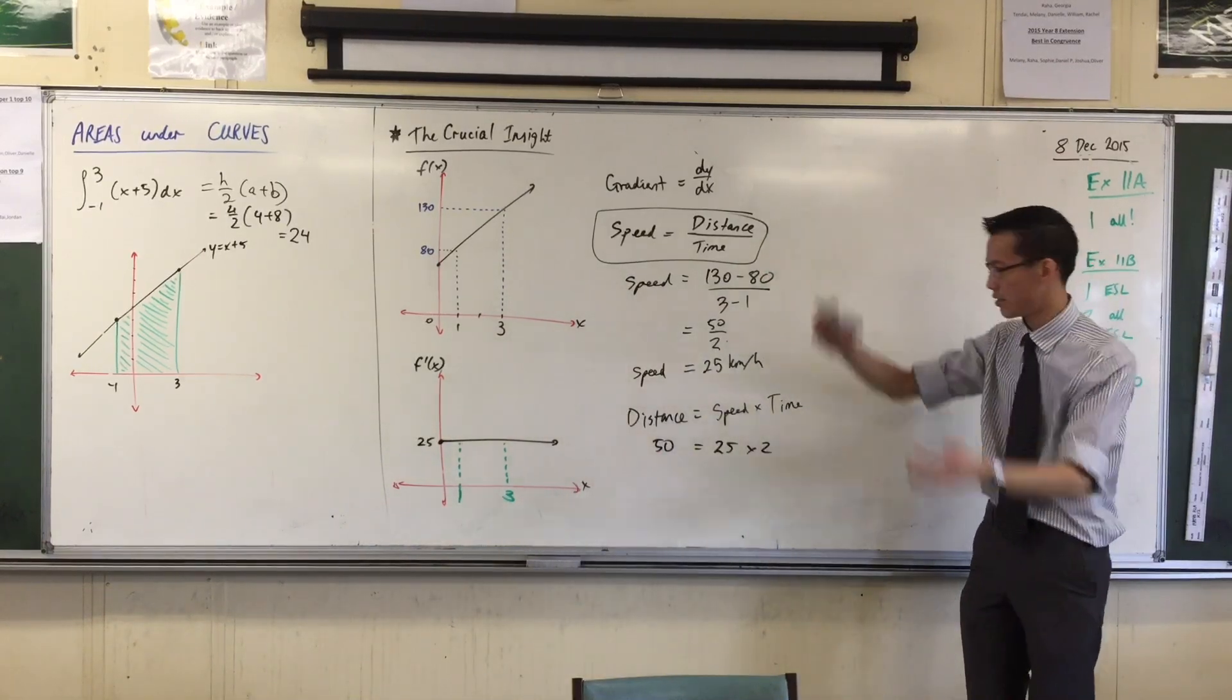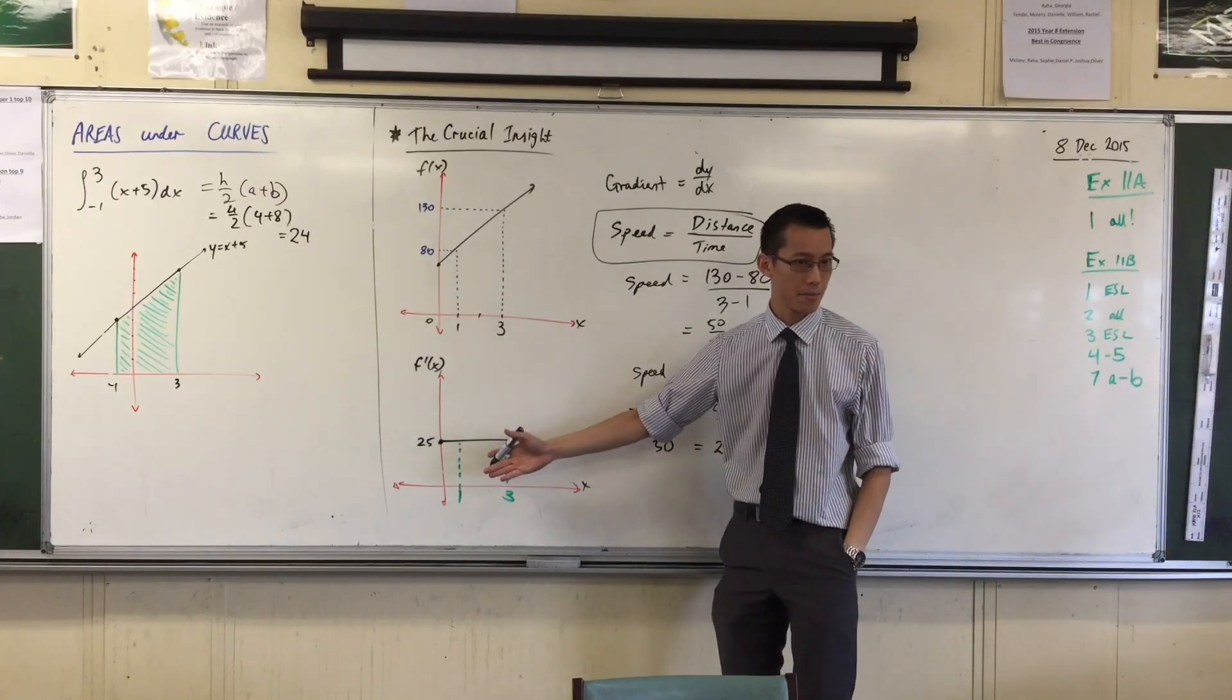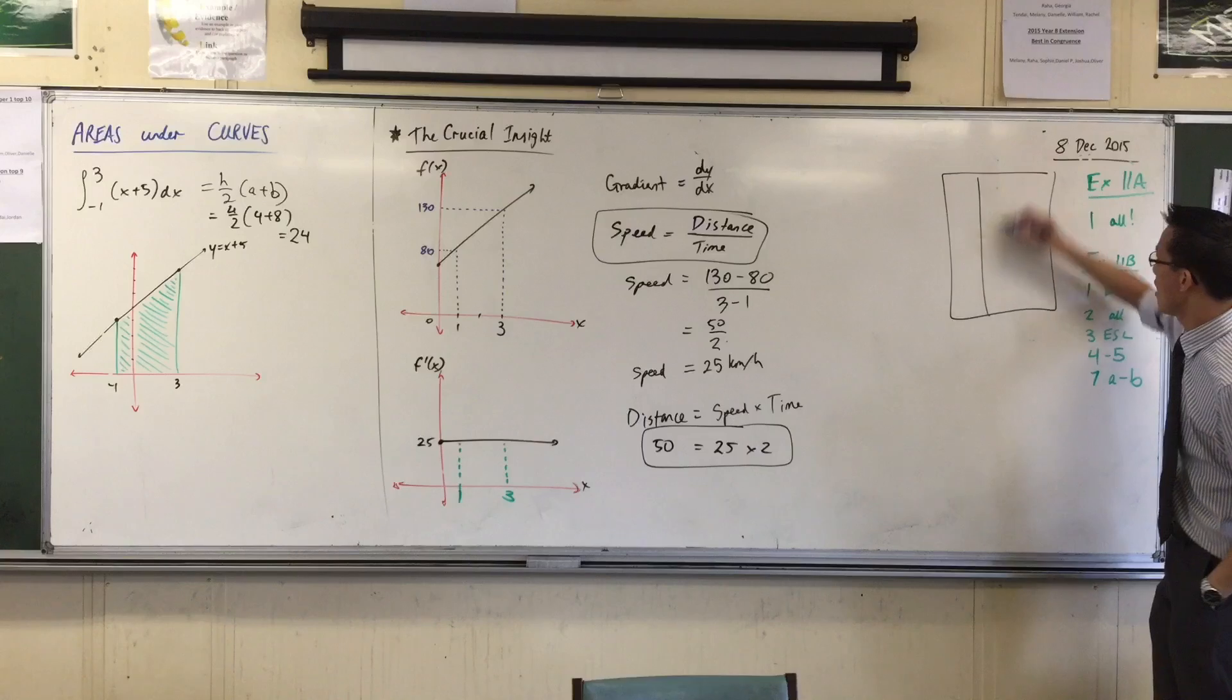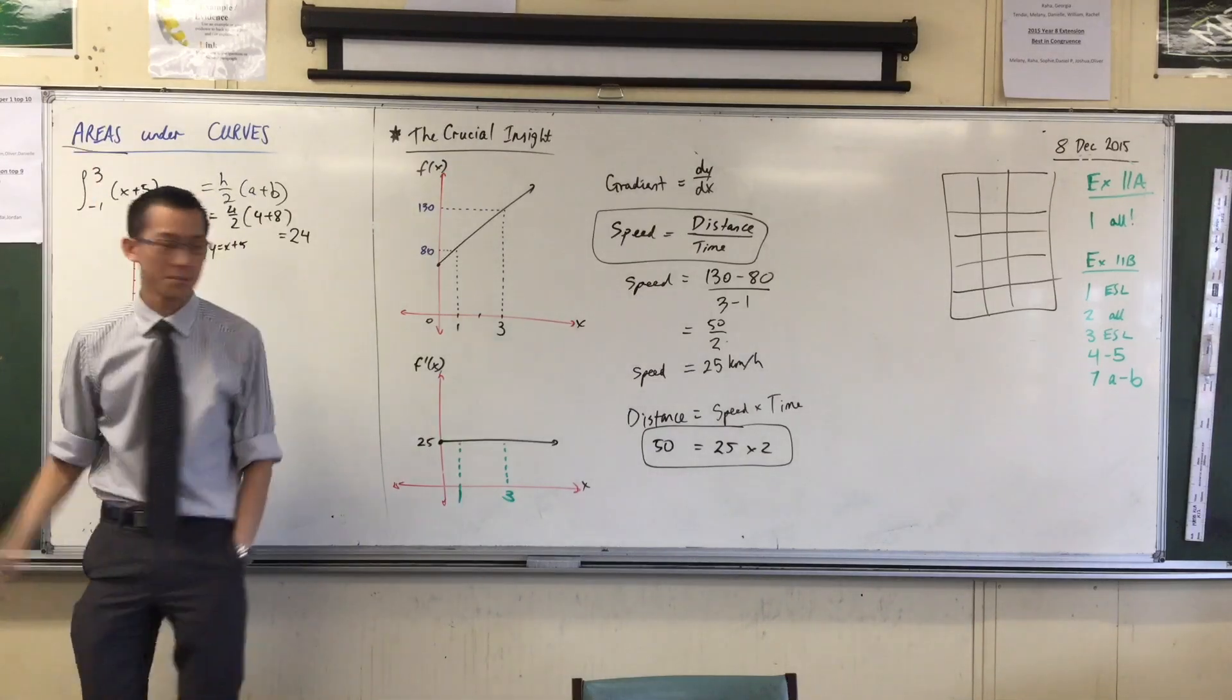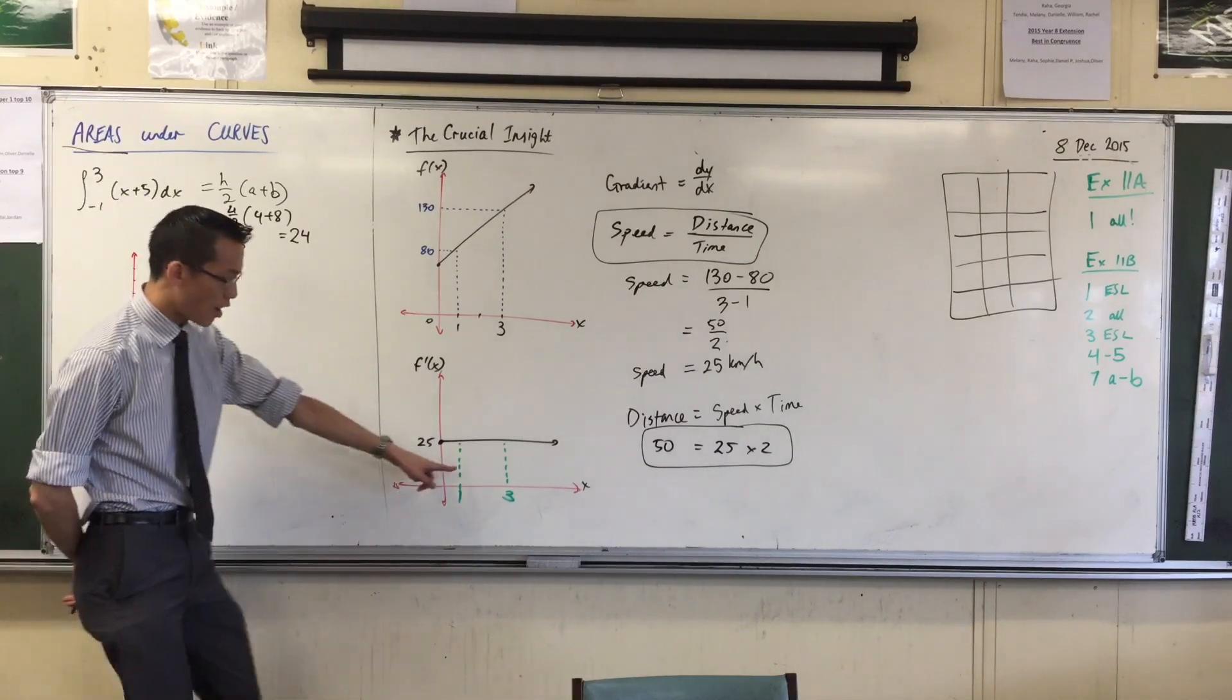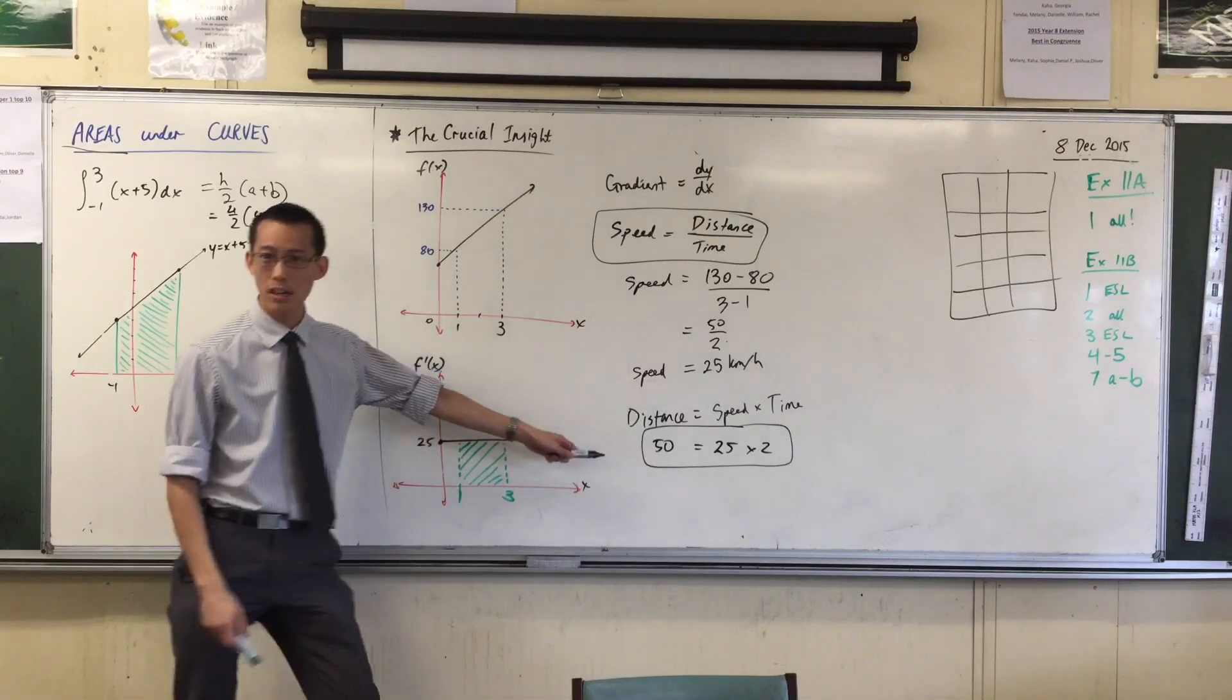Now, here's the crucial insight, okay? We know what this means on this graph. It's about gradient. What does this mean on this graph? The answer is, this statement here should look familiar, shouldn't it? Right back to the beginning of this lesson, I drew this thing, right? And I said that multiplication is really about, well, it's used to understand area, right? Area. 50 equals 25 times 2. This is an area, isn't it? What area is it? It's the area of this guy in here. It's the area under this particular curve. Do you see that? This area under the curve is what this tells me, okay?